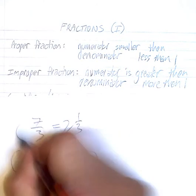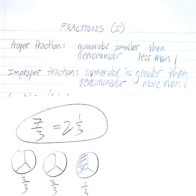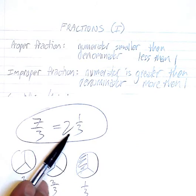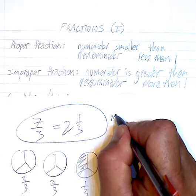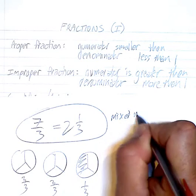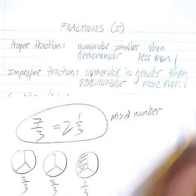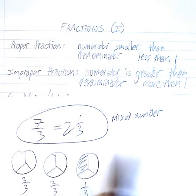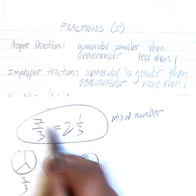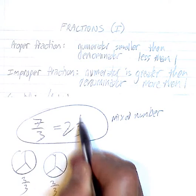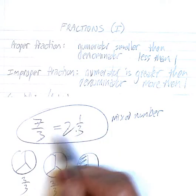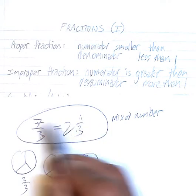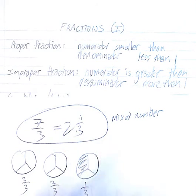So these are what we call equivalent fractions, improper, and this is what we call a mixed number. And you need to be able to go back and forth between these two. So 7 thirds is 2 and 1 third. 3 goes into 7 two times. 3 times 2 is 6, you got 1 third left over. If you want to go from here to here, 3 times 2 is 6, plus 1 is 7, 7 thirds. This is the basic idea of fractions.